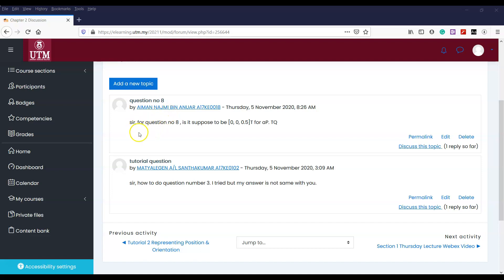I think Aiman Najmi from section 3 asked me this question. Is it for question number 8? Is it supposed to be 0, 0, 0.5 for PA? Let's look at question 8.